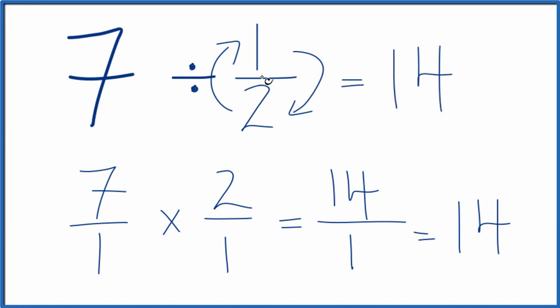If you multiply 14 by 1 half, you'll get 7. So to recap, we took 7, put it over 1, multiplied by the reciprocal here of 1 half, we got 14 over 1, which reduces to 14.